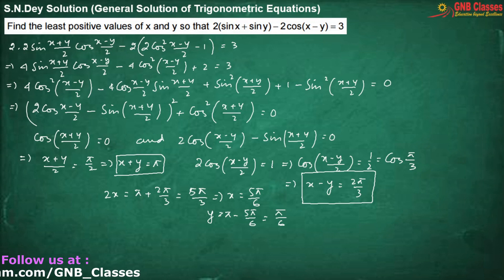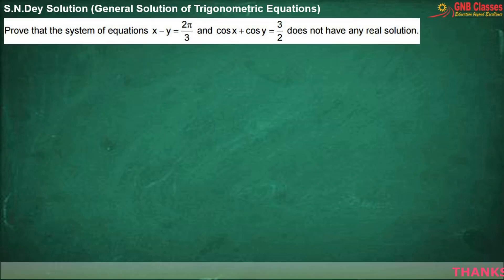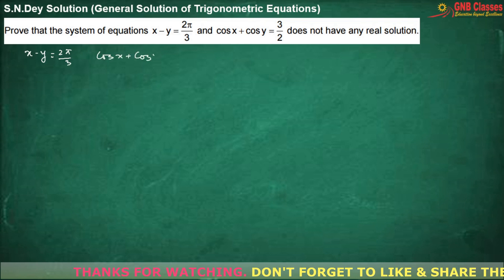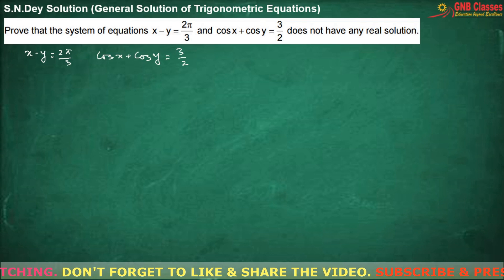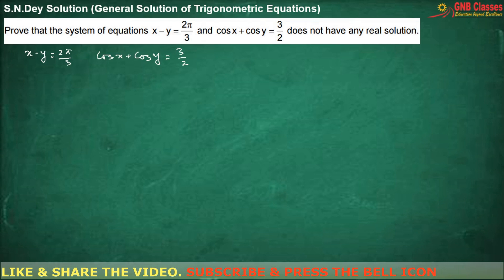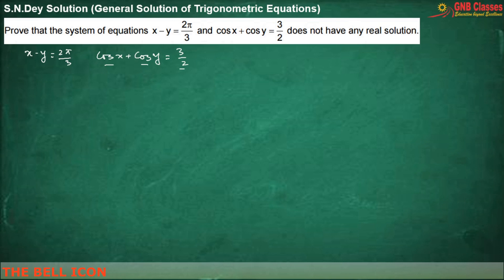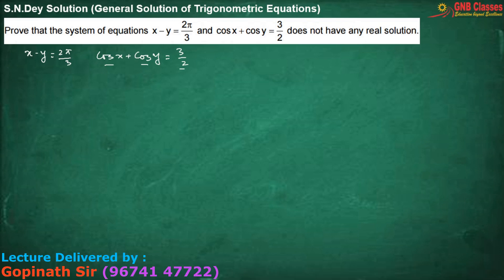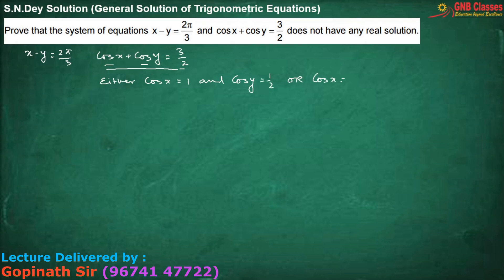Here they have said to prove the system of equations x - y = 2π/3 and cos x + cos y = 3/2 does not have any real solution. Since the maximum value of cos x is 1, this equation is valid only when either cos x = 1 and cos y = 1/2, or cos x = 1/2 and cos y = 1.